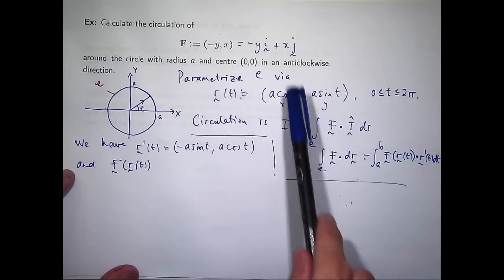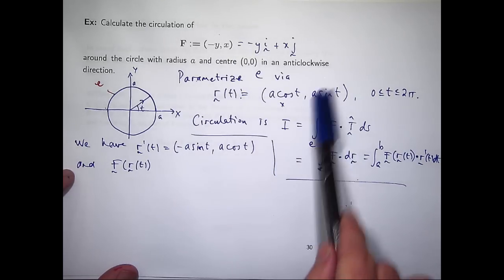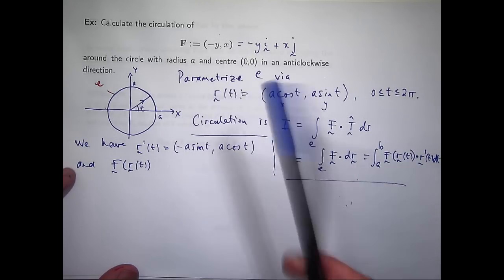And let's evaluate F along our parametrization. So I want to go up here and replace y with a sine t and replace x with a cosine t.